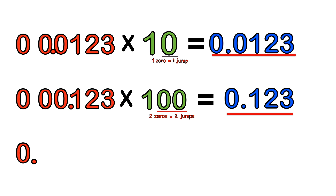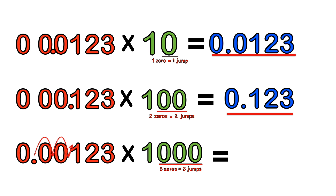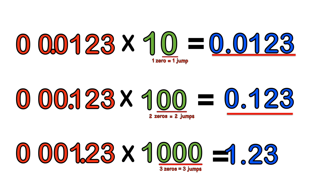How about 0.00123 times 1000? Count the number of zeros: three zeros equals three jumps. We go one jump, two jumps, three jumps, and the decimal point moves to make 1.23. We only read the numbers immediately before and all numbers after the decimal point — immediately before is 1 and after the point is 23. So the answer is 1.23.